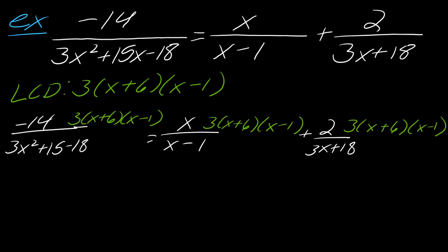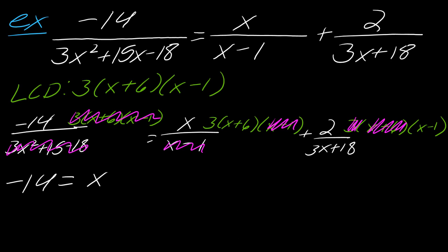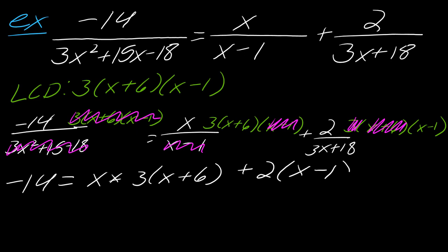So as I go through this, the entire denominator of the first fraction just cancels out. The x−1 cancels out on the second fraction, and then the 3 and the x+6 cancel out on the third. So I'm left with: −14 = x · 3(x+6) + 2(x−1).